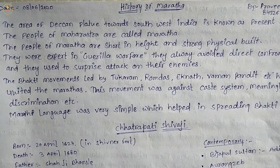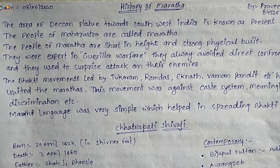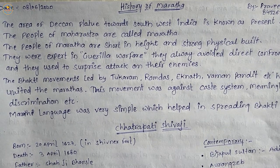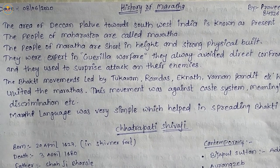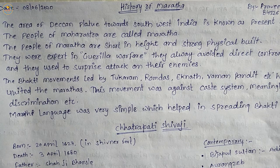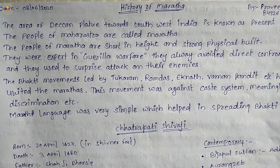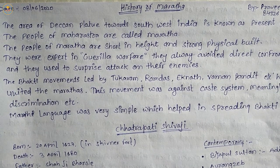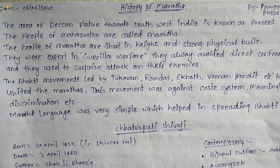Kanhoji Angre successfully kept the Portuguese and British naval ships at bay. However, the two crucial aspects of the Maratha defensive strategy and regional military history were securing the coastal area and building land-based fortifications.